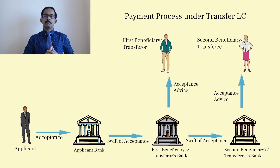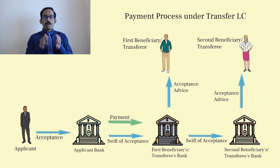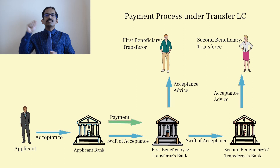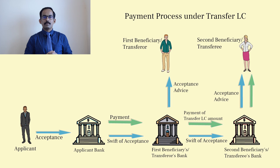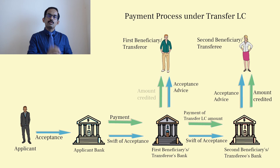On the maturity date, payment is transmitted from the applicant bank to the first beneficiary bank, from which the amount related to the transfer LC documents is transmitted to the second beneficiary bank and credited to the second beneficiary's account. The balance is credited to the first beneficiary's account. For example, if the value of documents submitted by the second beneficiary is $10,000 and the value submitted by the first beneficiary to the applicant is $15,000, then on maturity $15,000 is transmitted from the applicant bank to the first beneficiary bank, out of which $10,000 goes to the second beneficiary bank and the remaining $5,000 is credited to the first beneficiary's account.